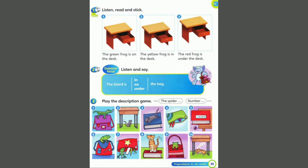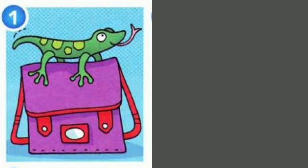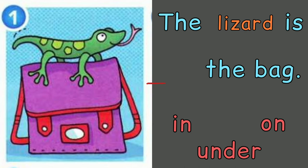Now let's go to number 3: Play the description game. Look at this picture. What animal is in the picture? Yes, the animal is a lizard. Where is the lizard? The lizard is on the bag.